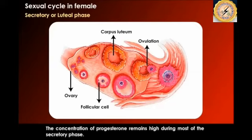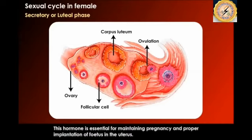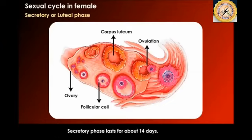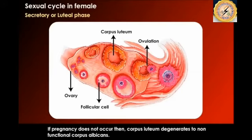The concentration of progesterone remains high during most of the secretory phase. This hormone is essential for maintaining pregnancy and the proper implantation of the fetus in the uterus. The secretory phase lasts about 14 days. If pregnancy does not occur, the corpus luteum degenerates into the non-functional corpus albicans.